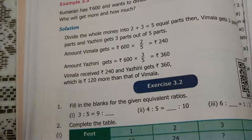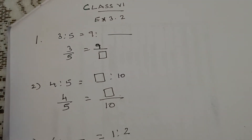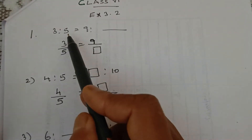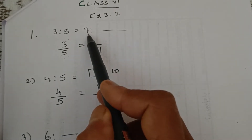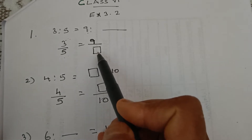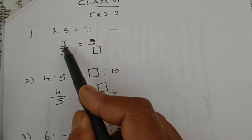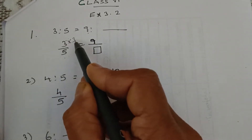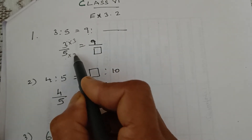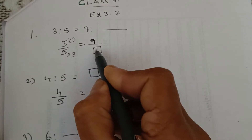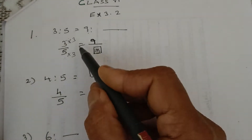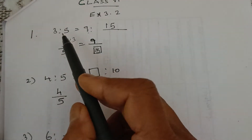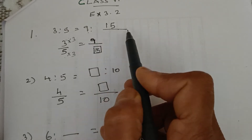We will see the sums one by one. The first one is 3 is to 5 is equal to 9 is to dash. That is, 3 by 5 is equal to 9 by the unknown number. We have to find this number. Compare the numerators — tell 3 tables till you get 9. 3 into what gives you 9? Yes, 3 threes are 9. So the numerator is multiplied by 3. Therefore, multiply the denominator also by 3. 5 threes are 15. So the answer is 15. 3 by 5 and 9 by 15 are equivalent fractions. So, 3 is to 5 is equal to 9 is to 15.